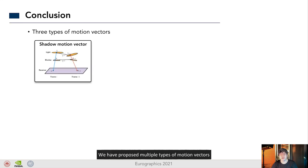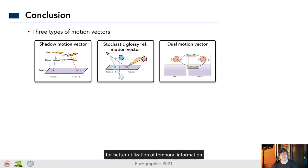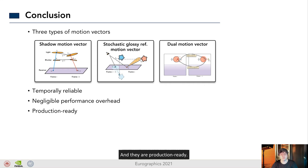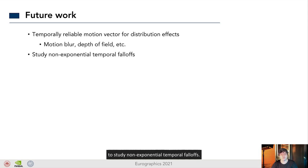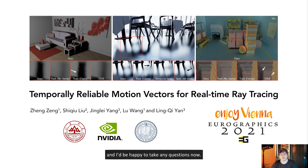Now, let's wrap up. We have proposed multiple types of motion vectors for better utilizing of temporal information in real-time ray tracing. We show that our motion vectors are temporally more reliable than traditional motion vectors, with negligible performance overhead, and they are all production-ready. In the future, we would like to design temporally reliable motion vectors for distributing effects, such as motion blur and depth of field effect. It would also be interesting to keep multiple previous frames to study non-exponential temporal falloffs. Exploring machine learning approach to better summarize temporal correlations from examples could also be a promising direction. Thanks for your attention, and I'd be happy to take any questions now.